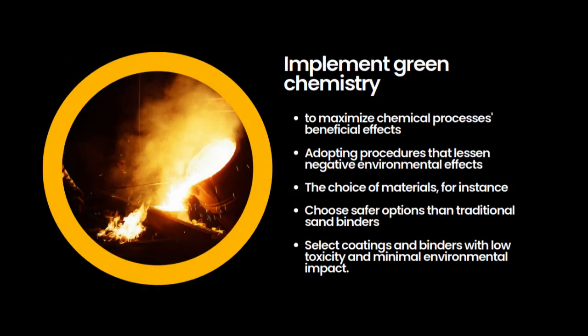Green chemistry aims to create chemical processes and products that are socially responsible, economically viable, and ecologically beneficial. Practices such as reducing negative environmental effects, minimizing waste production, and improving resource efficiency are key to implementing green chemistry in sand casting. This includes selecting materials with low toxicity, emissions, and negative environmental impact. Safer alternatives to traditional sand binders that contain hazardous chemicals should be considered, and recyclable and ecological materials should be used whenever possible. Substituting hazardous chemicals with greener alternatives, such as low-toxicity coatings and binders, is recommended. Water-based or solvent-free products and environmentally friendly release agents should be chosen, making the sand casting process more environmentally friendly and reducing its impact on human health and the environment.